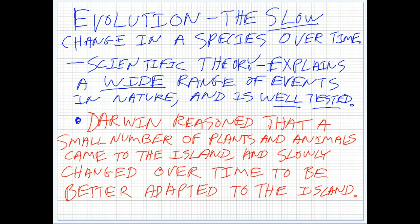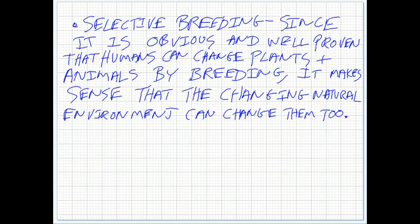Darwin reasoned that a small number of plants and animals came to the island and then slowly changed to become better adapted. Now, since humans can change animals — like breed dogs into things like Chinese-crested hairlesses and chihuahuas — it seems obvious that if we can change animals, then nature can apply pressure to change animals also. And that's what we do see in nature.